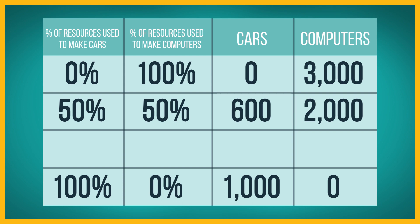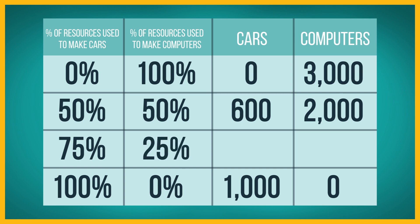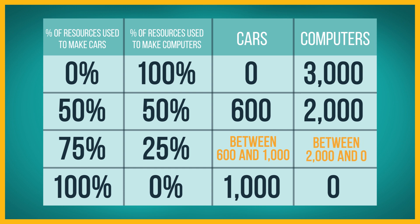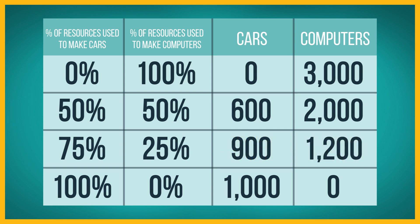Finally, consider what would happen if the economy uses three-quarters of its resources to make cars and one-quarter of its resources to make computers. The economy would produce between 600 and 1,000 cars and between 2,000 and zero computers. Let's suppose that the values are 900 cars and 1,200 computers.